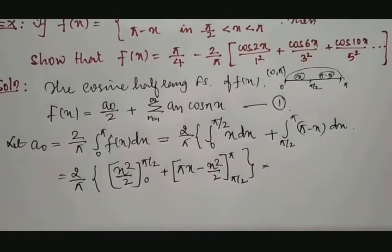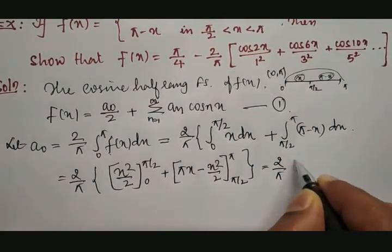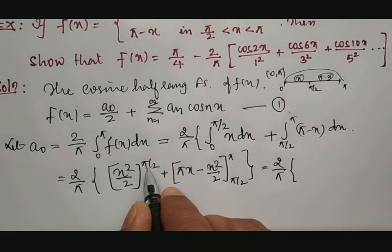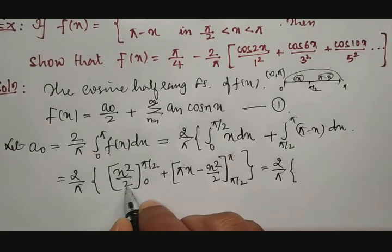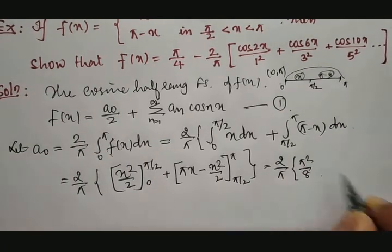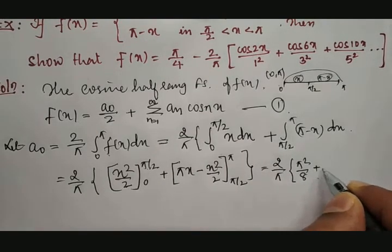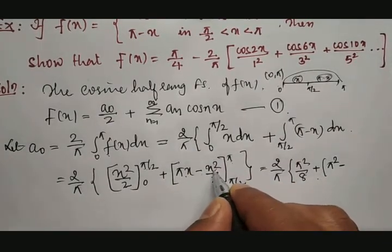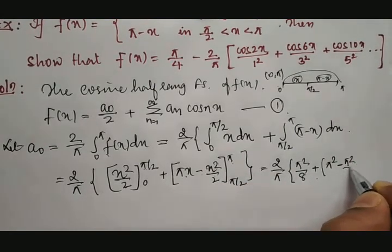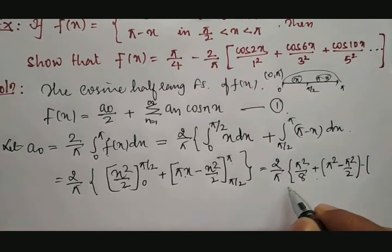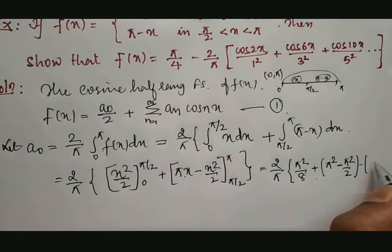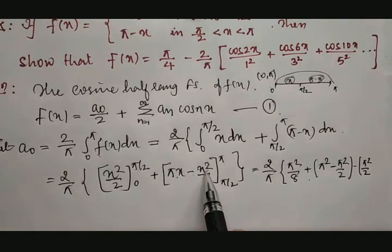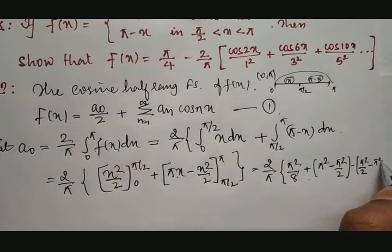This equals 2 divided by pi into: integration of x gives x square by 2, between 0 to pi by 2, plus integration of pi gives pi x, minus integration of x gives x square by 2, between pi by 2 to pi. Substituting the upper limit pi by 2: (pi by 2) squared is pi square by 4, divided by 2 gives pi square by 8. If you put pi: pi into pi is pi square, minus pi square by 2 for the x square by 2 term.